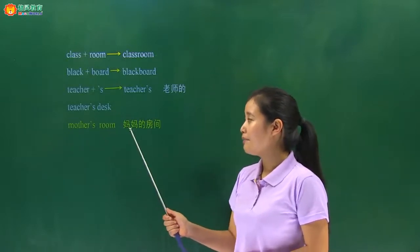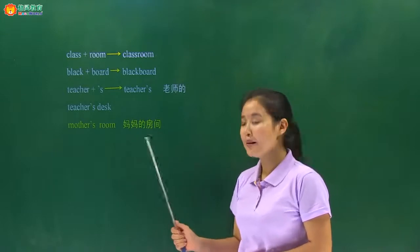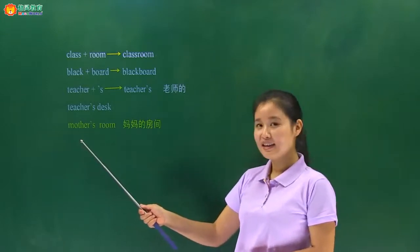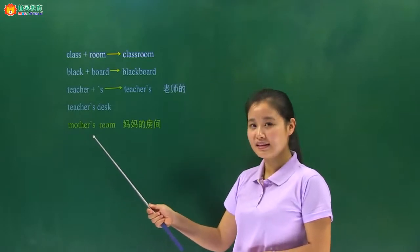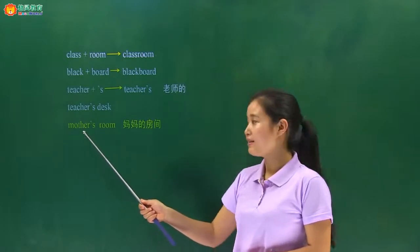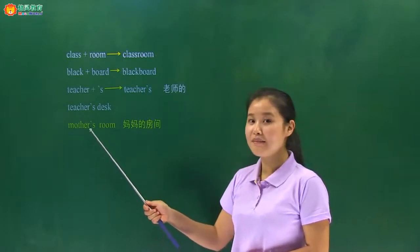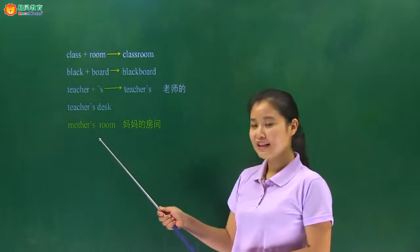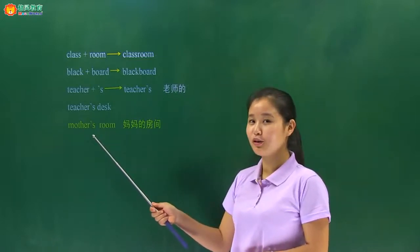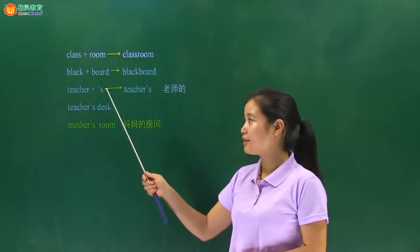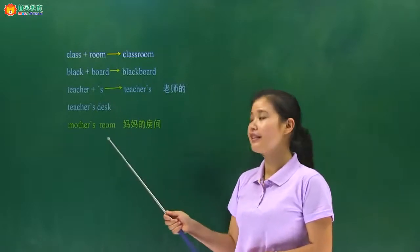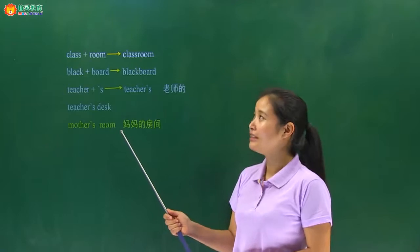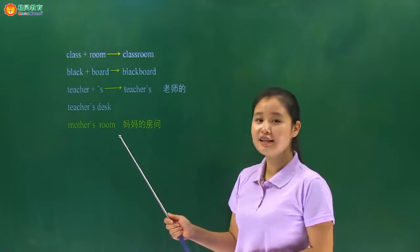我们看一下这个例子，妈妈的房间：妈妈，mother，mother's，妈妈的，mother's room，妈妈的房间。希望同学们要记住，表示'什么什么的'，加一撇加S在单词后面就可以了。好，这是我们的实际单词部分。